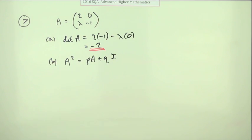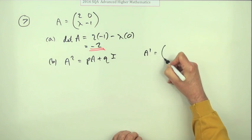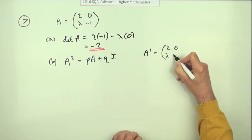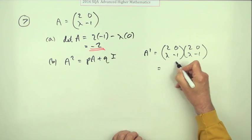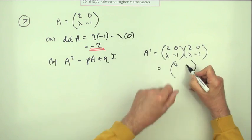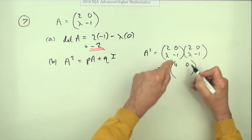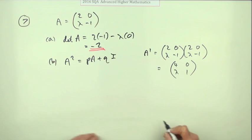A squared would be two zero lambda negative one times two zero lambda negative one, forming this other two by two matrix. Four and zero is four, zero and zero is zero, two lambda minus lambda is lambda, lambda times zero and that's positive one.